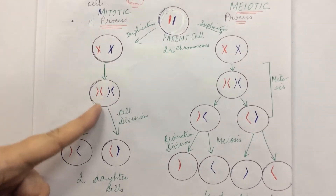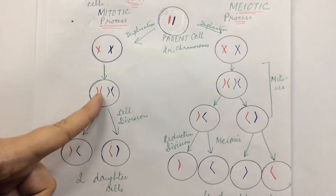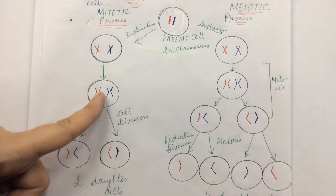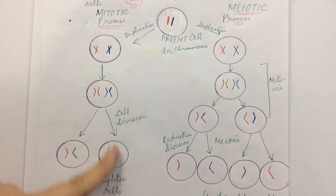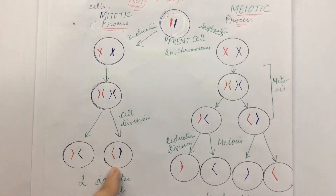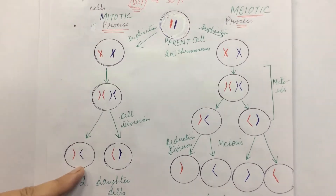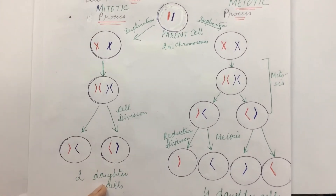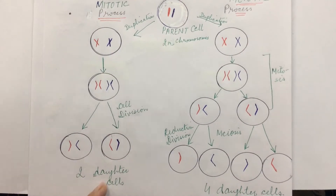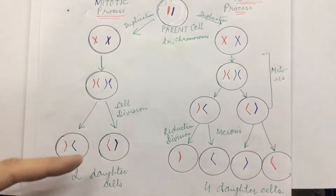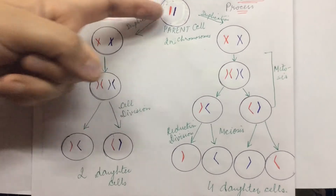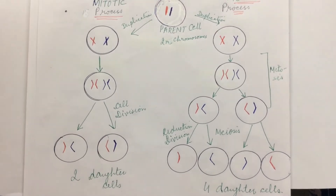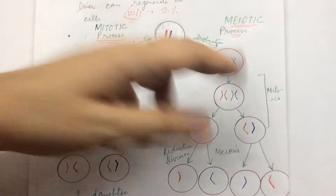After separation, one copy from the father and one from the mother goes into one daughter cell, and the other copy of each goes into the other daughter cell. At the end of mitotic division, we get two daughter cells, and each daughter cell again has the diploid number of chromosomes — the same number is maintained in both daughter cells.